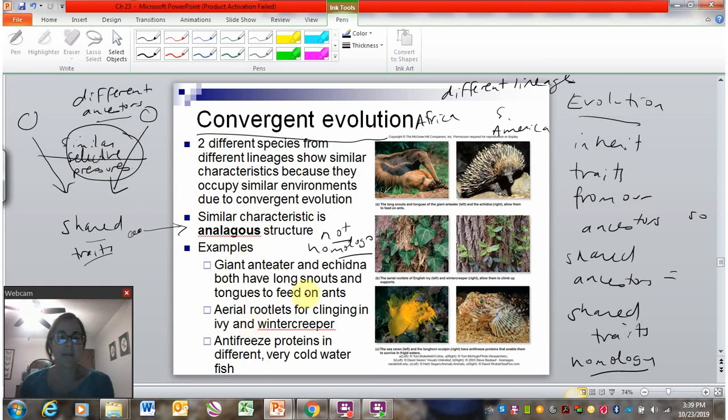Other examples, we have ivy and winter creeper. And they have aerial rootlets. That means aerial means living in air instead of soil. And so they have roots that can live in air instead of soil. And that's because the selective pressure was to grow on other structures. So ivy growing up these different tree trunks. So the selective pressure was to grow in this different place of the tree trunks. Again, these are different lineages. They're not closely related plants. They evolved these traits separately.